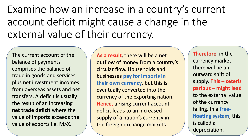Therefore, in the currency markets there will be an outward shift of supply, and this shift, ceteris paribus — many things can affect the exchange rate — might lead to the external value of the currency falling. In a free floating system, make the examiner aware that you're aware of the system being used. This is called a currency depreciation. In other words, an increased current account deficit increases the net outflow of currency supply and through the market causes the exchange rate to fall.